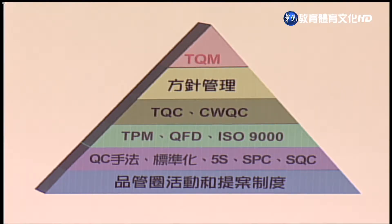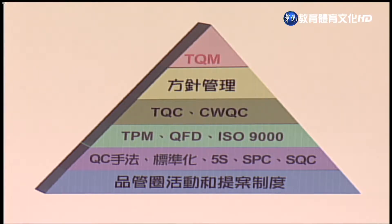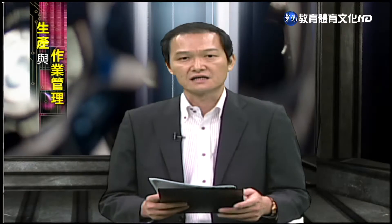透过TQM领导统御的方法，把各个统计工具、应用手法、持续改善、品质系统的建制，由上而下推行。从TQM开始，底下有方针管理，由TQM所拟定的公司核心事项透过方针管理或策略管理方式来进行规划。接下来到TQC、CWQC，也就是全面品质管理、全公司品质管制，中阶干部要做的包括TPM预防保养、QFD品质机能展开，还有ISO 9000整个品管制度的建制。